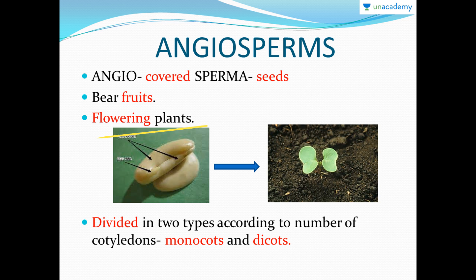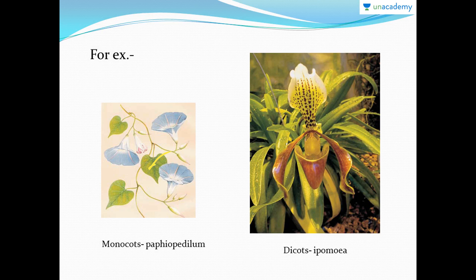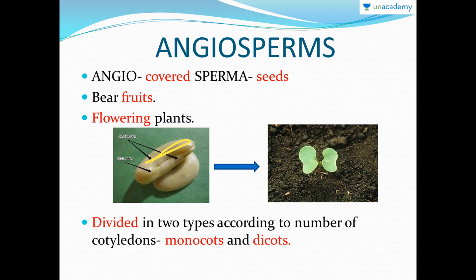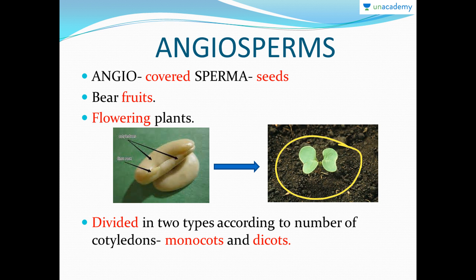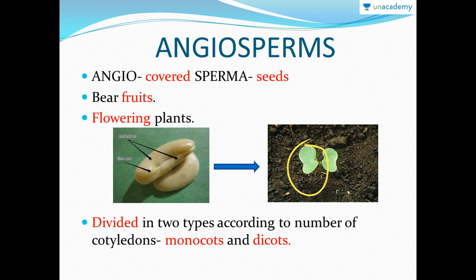Now I want to show you the seed. This part you can see here is the cotyledon — this is a dicot cotyledon. Plants that have two cotyledons are dicots, and those that have a single cotyledon — where you cannot split the seed into two parts and the dividing line is not visible — are monocots. These cotyledons are also called seed leaves, because when we sow a seed, the cotyledons divide, turn green, and form leaf-like structures — that's why they are called seed leaves.